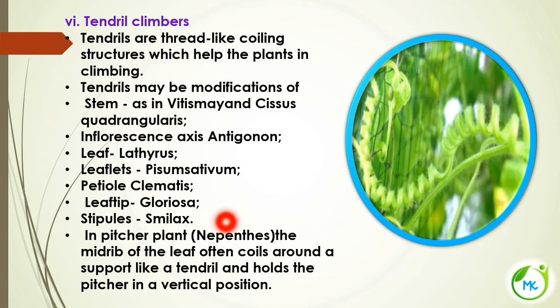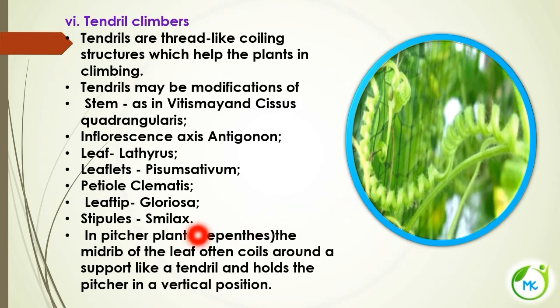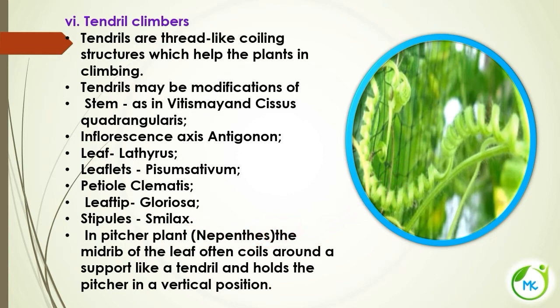In the pitcher plant, Nepenthes, the midrib of the leaf coils around the support like a tendril. The midrib coils around and performs the function of a tendril for holding the pitcher in a vertical position.